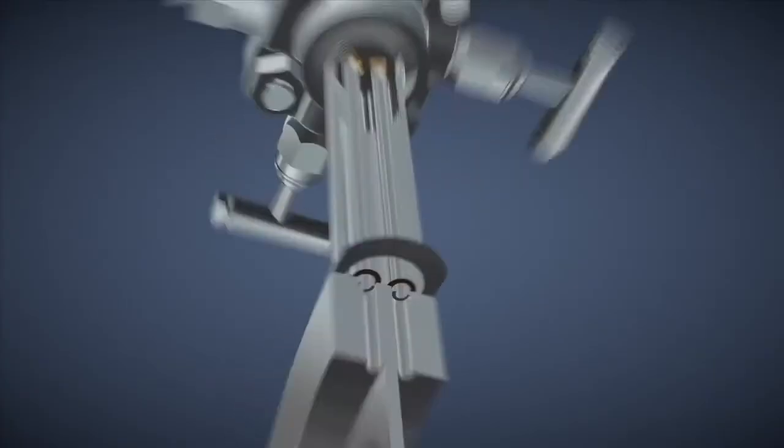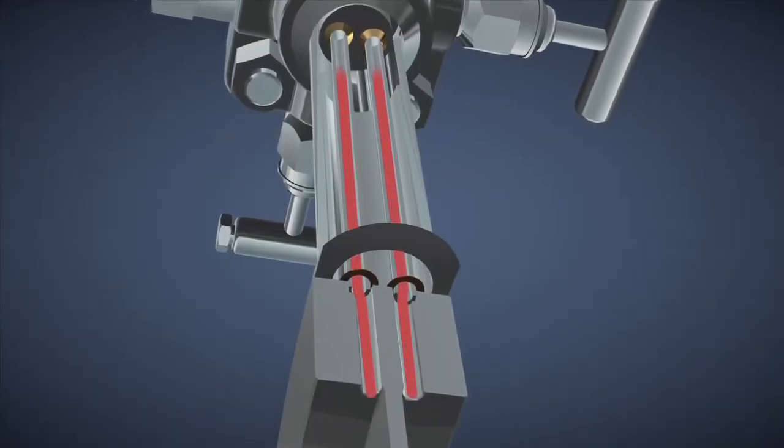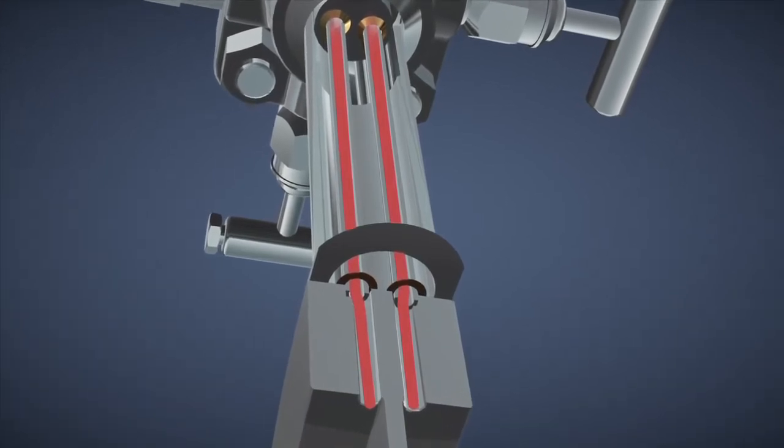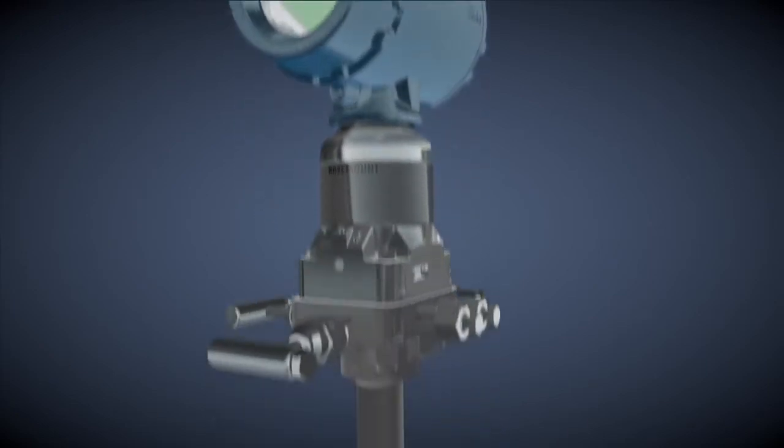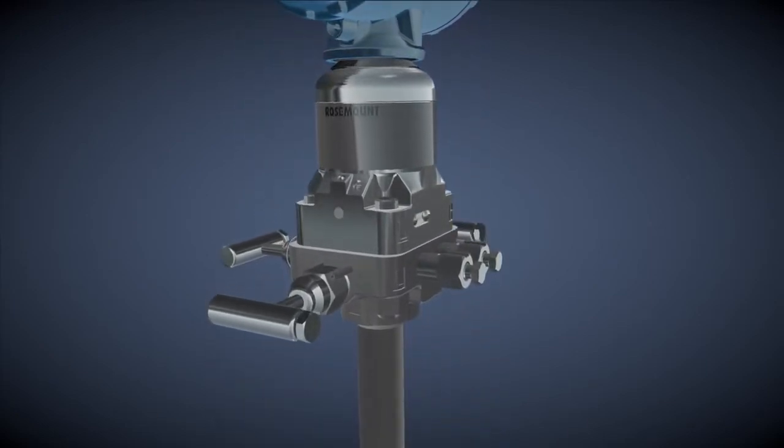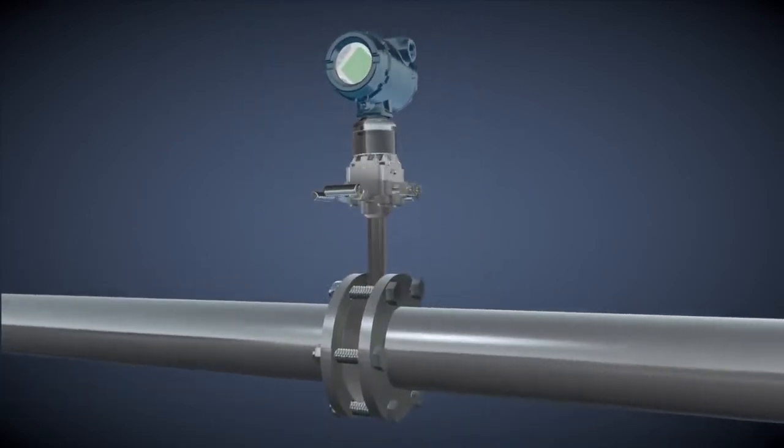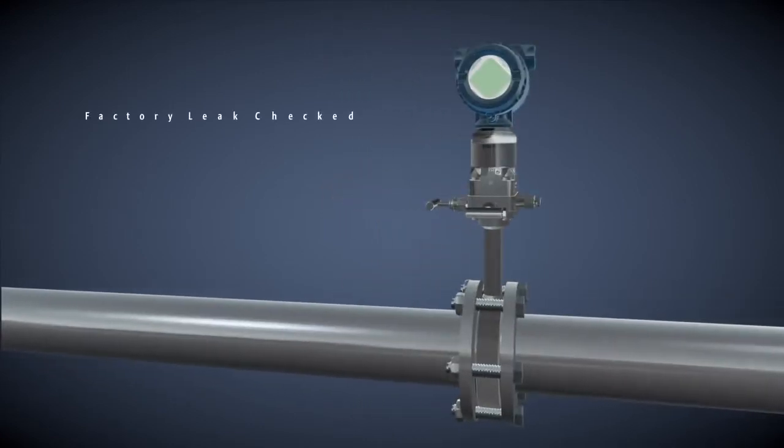Now with new and improved primary elements, the impulse piping is built into the primary element. This allows the transmitter to be directly mounted to the isolate and equalize valves, resulting in an integrated flow meter. The built-in piping is factory leak checked, makes installation easier, and reduces maintenance costs.